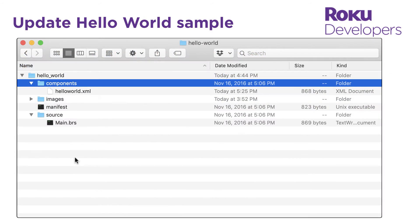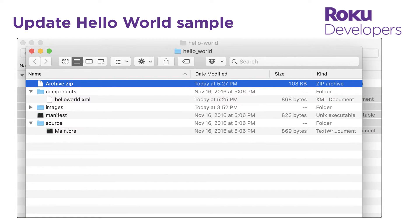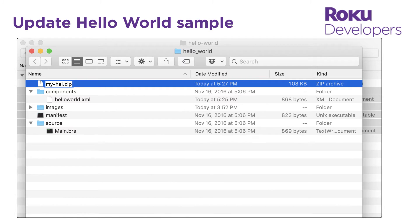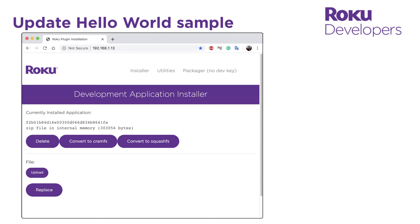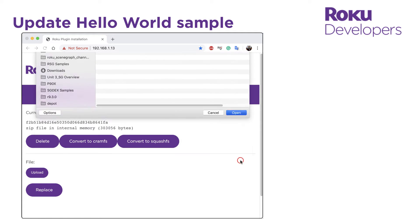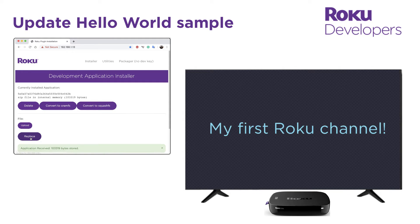Save the file and then zip the contents inside the Hello World directory. Do not zip the directory itself or the development application installer will report an error when you try to upload the channel. Name the zip file something easy to find, such as myhelloworld.zip. Go back to the development application installer, click upload, select your myhelloworld.zip file, and then click replace. This relaunches the channel and displays the updated text you entered on the screen.